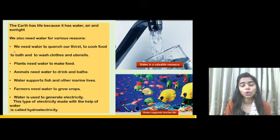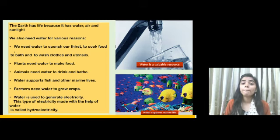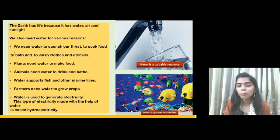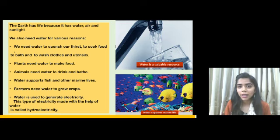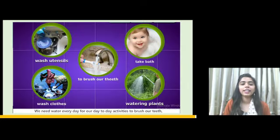Farmers grow crops with the help of water. Water is also used to generate electricity. This type of electricity made with the help of water is known as hydro electricity — a very important term, you can mark it in your textbook. Just as solar energy uses sunlight, we can also generate electricity with water, and that is called hydro electricity.